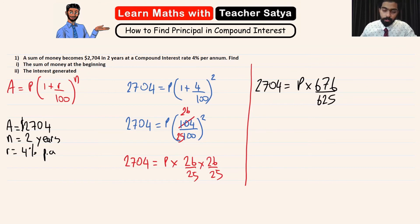All right, now in order for us to find the value of P, we are going to transpose 625 to the other side. So 2704 × 625 = P × 676. Now what we are going to do is transpose 676 to the other side, so 2704 × 625 ÷ 676 = P.